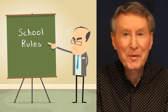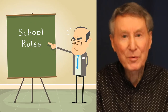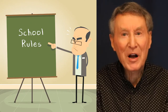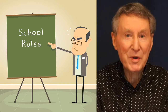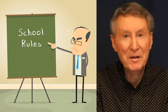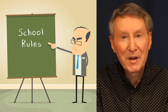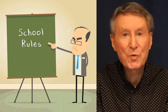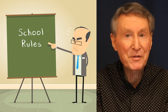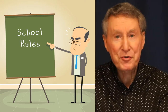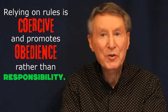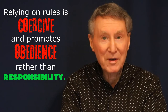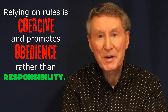Basic school rules are counterproductive and prompt stress between adults and young people. This is because rules place the adult in an adversarial relationship. Relying on rules is coercive and promotes obedience rather than responsibility.